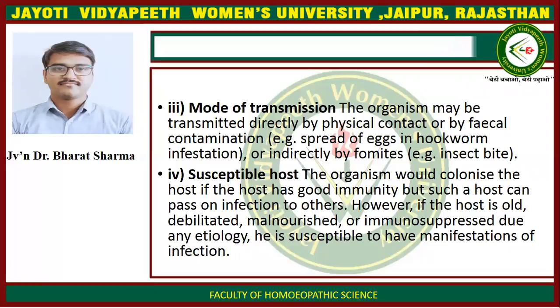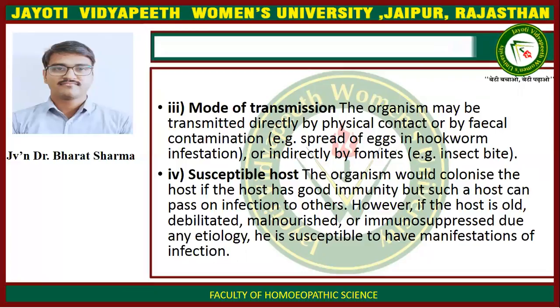Mode of transmission. The organism may be transmitted directly by physical contact or fecal contamination — for example, spread of eggs in hookworm infestation — or indirectly by fomites. Fourth, susceptible host. The organism would colonize the host if the host has good immunity, but such a host can pass on infection to others. However, if the host is old, debilitated, malnourished, or immunocompromised due to any etiology, he is susceptible to manifest infection.